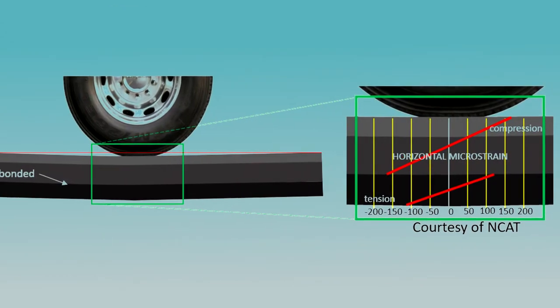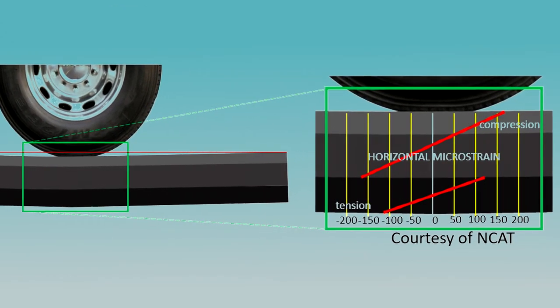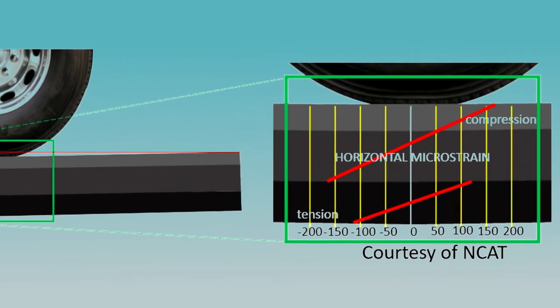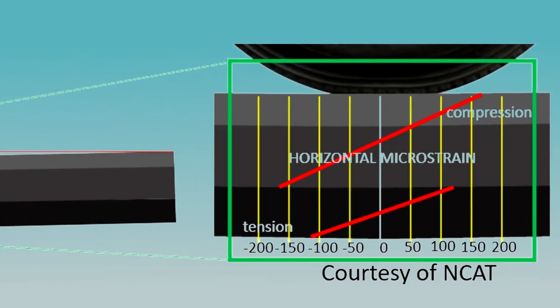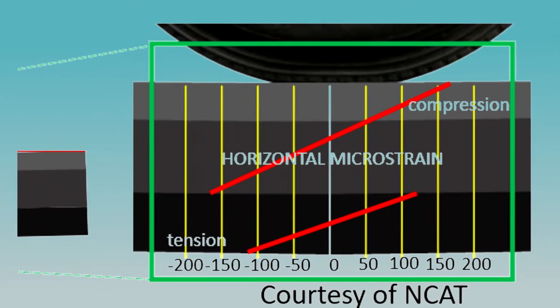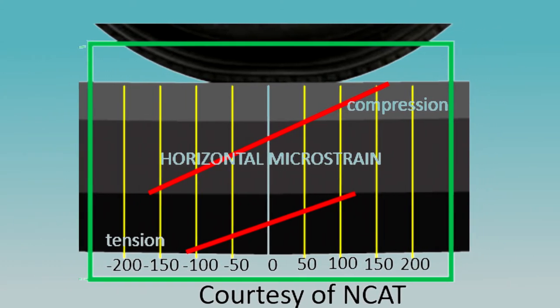Let's look at what happens if there is debonding between the intermediate layer and the base layer. The amount of horizontal microstrains peak at higher levels both at the top and bottom of the uppermost debonded layer.